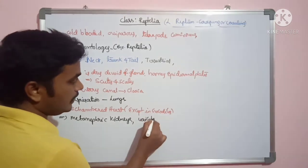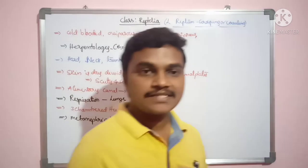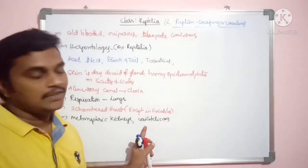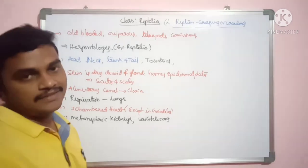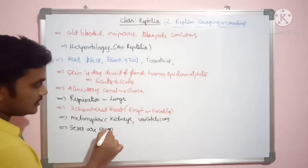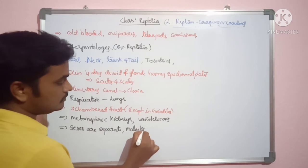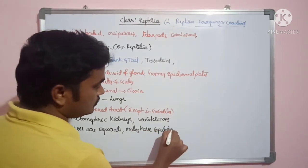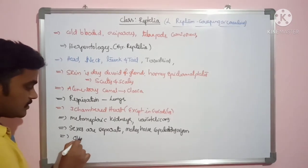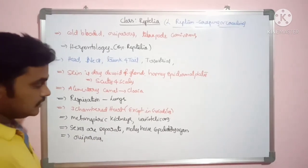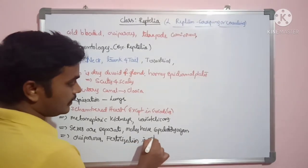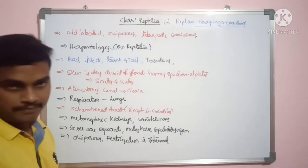Kidneys are metanephric. These are uricotelic organisms, meaning their excreted product is uric acid. Because they conserve water, they secrete uric acid as their excretory product. Sexes are separate. Males have copulatory organs — hemipenis — present in males. The condition is mostly oviparous.